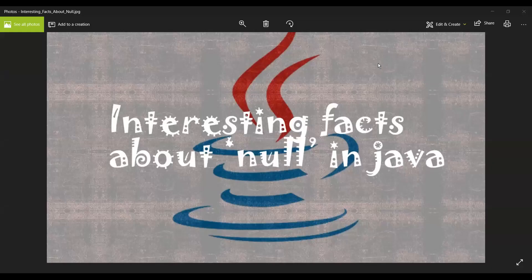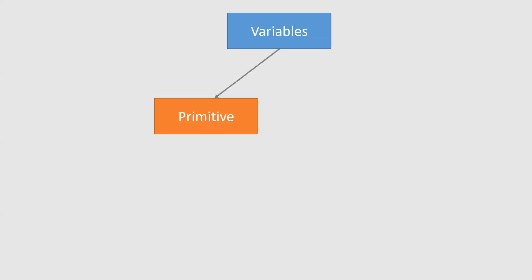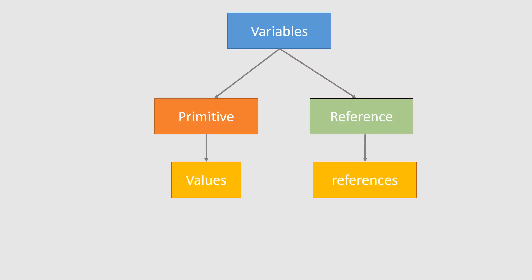Hi everyone. In this video, we are going to discuss some interesting facts about null in Java. We know variables in Java are of two types: primitive data types and reference types. Primitive data types store values and reference types store references. Primitive data types have default values — for example, integer has zero, the default value of boolean is false, and so on. So what is the default value of references? When you declare a reference type and it is uninitialized, the default value is null.